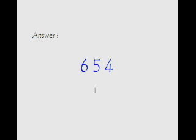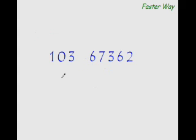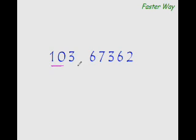Now let me show you the faster way of doing it. The faster way of dividing when the divisor is a three-digit number is not very different from what we have seen in the last video. Since there are three digits, you take the first two digits as your main divisor and keep the last digit as the unused digit. So 10 — how many times will 10 go into 67? 6 times is 60, so write 6 here and the remainder is 7.